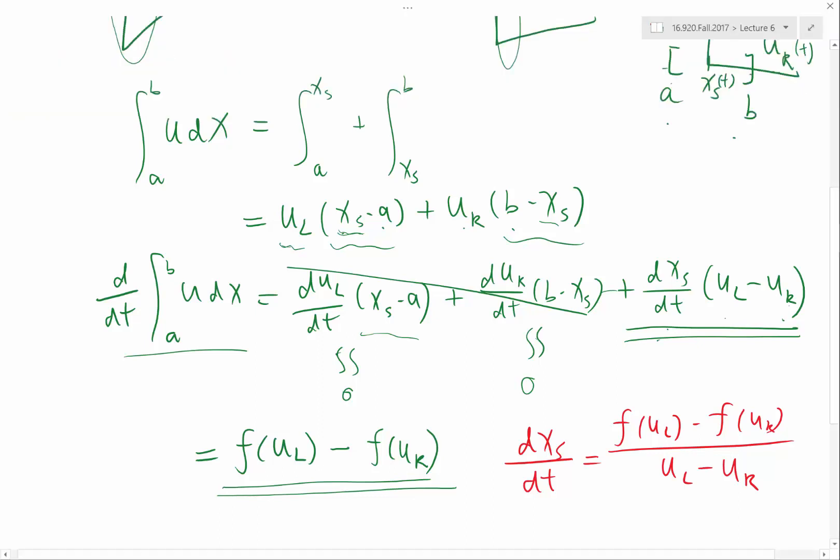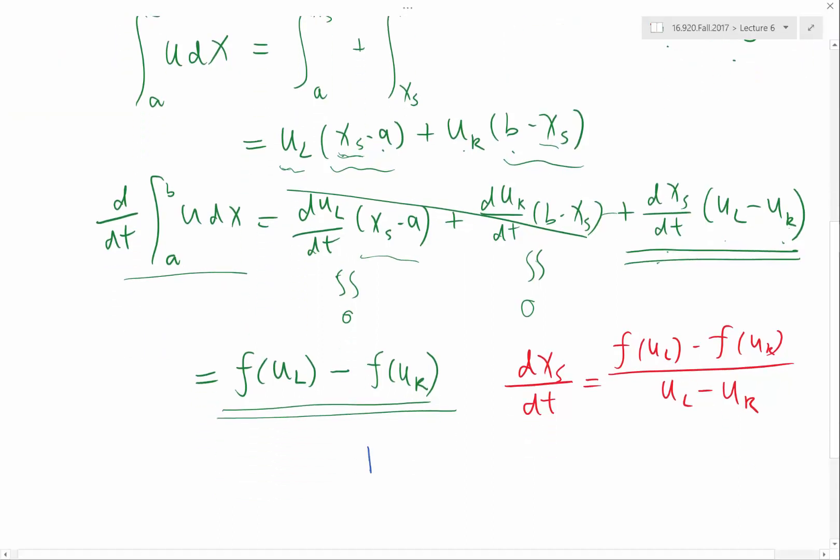And for Burger's equation, in particular where f is equal to u squared over 2, this would give me u_l squared minus u_r squared, divided by 2 times u_l minus u_r. That is simply u_l plus u_r over 2.